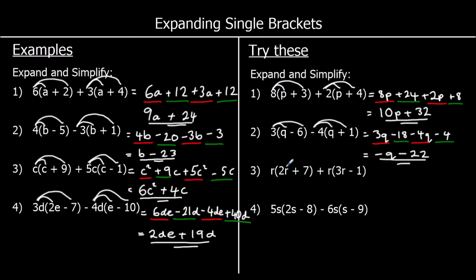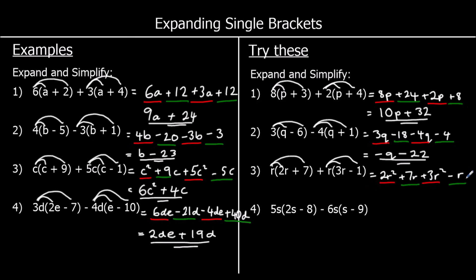The third one: r times 2r is 2r squared, and r times 7 is 7r. r times 3r is 3r squared, and r times negative 1 is negative r. So we've got r squareds and rs to simplify: 2r squared plus 3r squared is 5r squared. And 7r take away 1r is 6r. So 5r² plus 6r.